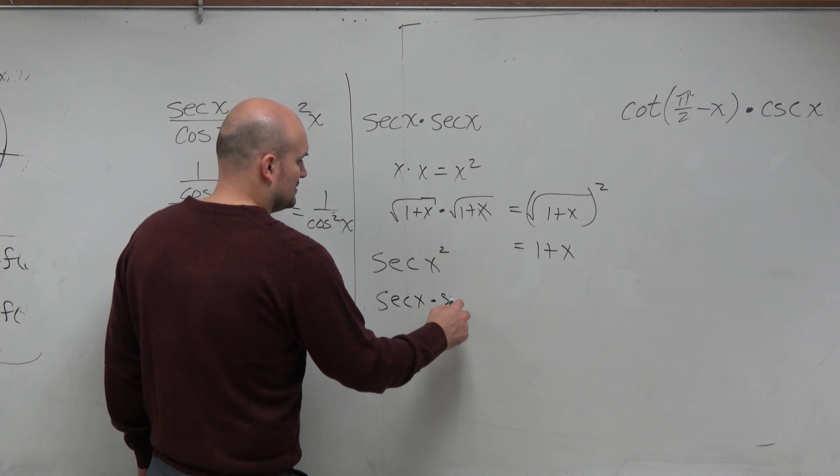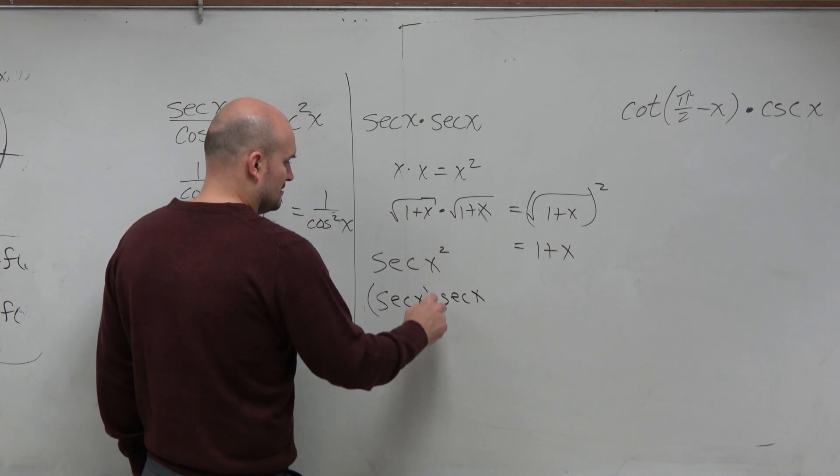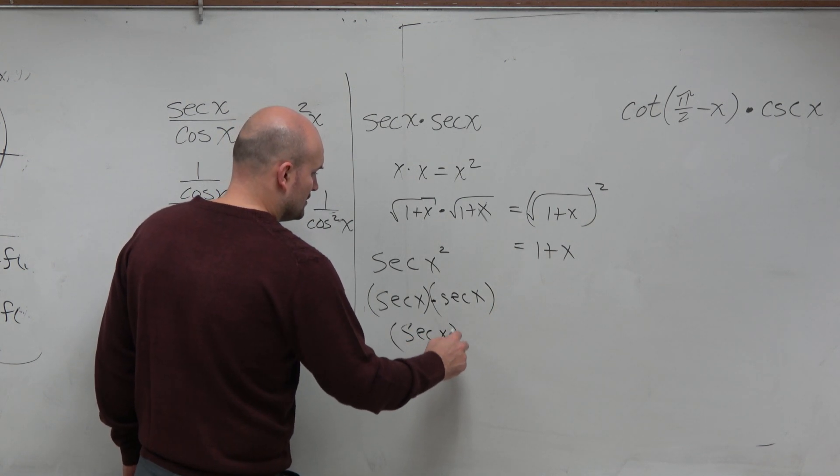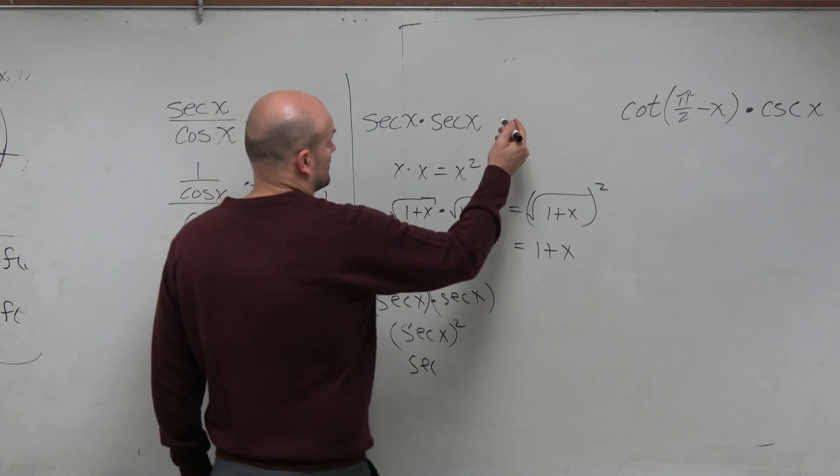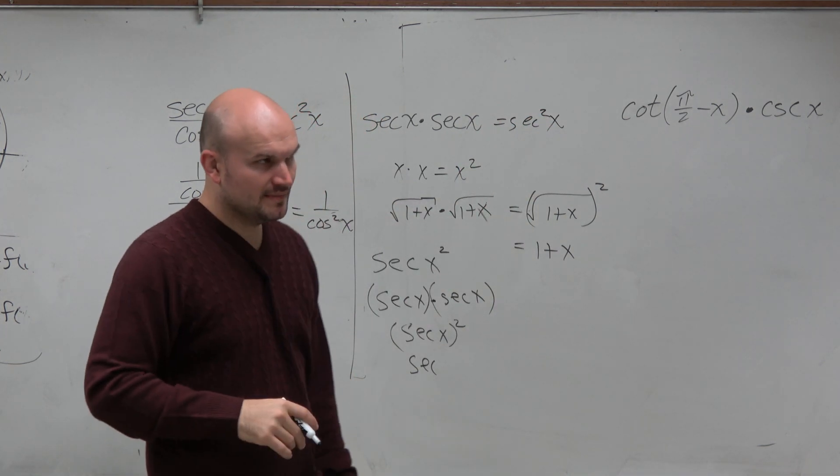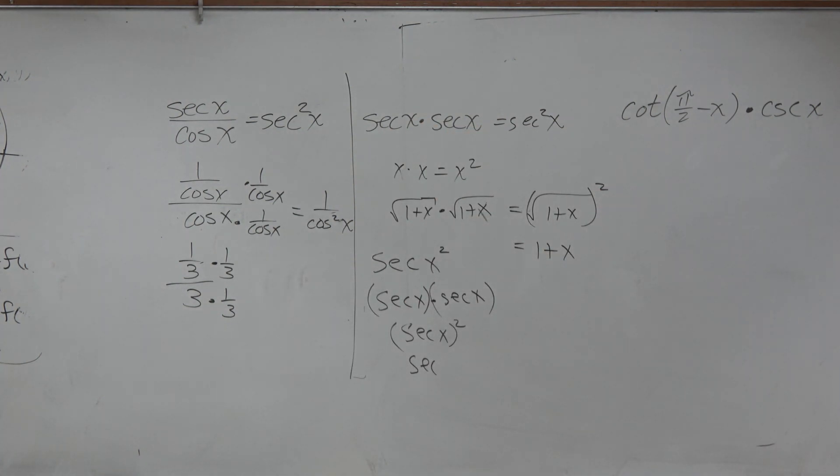Secant of x times secant of x is secant of x squared, which we just write as secant squared of x. But please do not square the angle, because we don't do it for other functions, OK?